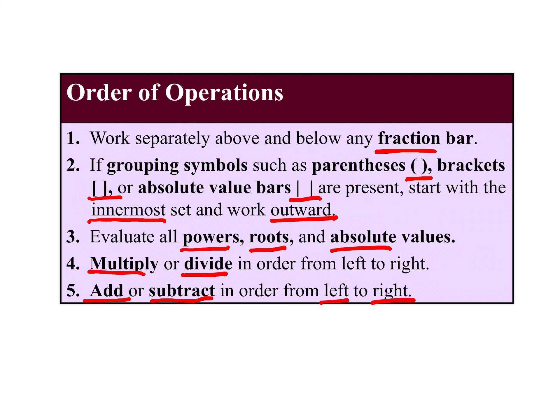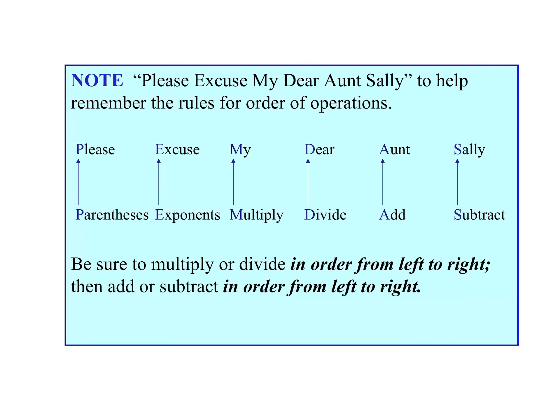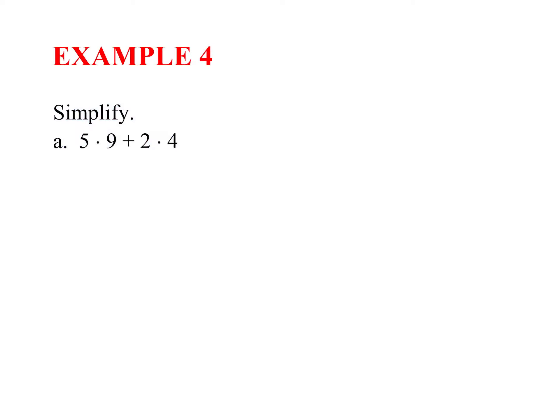Some of you might remember 'please excuse my dear Aunt Sally' — you can use that too. So looking at an example: we have multiplication and addition. Multiplication comes first. 5 times 9 is 45, then 2 times 4 is 8, and 45 plus 8 is 53. That's our first one.